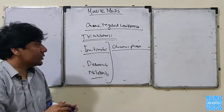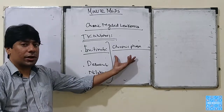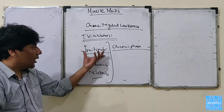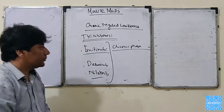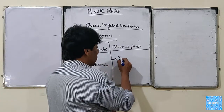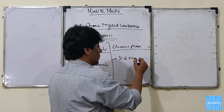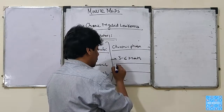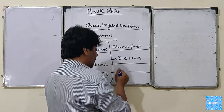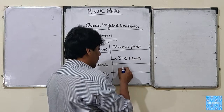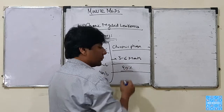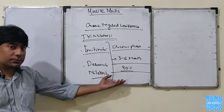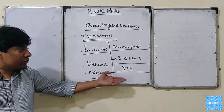The chronic phase is the easiest to treat and lasts about three to five years. If we start the drug imatinib on time, then in about three to six months the Philadelphia chromosome disappears in about 90% of cases — that must be a good response.